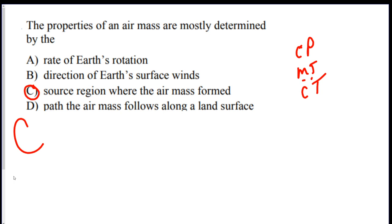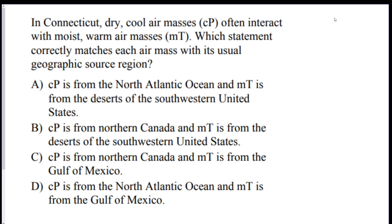Number two. In Connecticut, dry, cool air masses often interact with warm, moist air masses. So CP interacts with MT. Which statement matches each air mass with its usual source region? If you remember, CP is cold and dry. That's from Canada. And MT is warm and moist. So that's from the Gulf of Mexico. You will have to remember this. There is no way around it. So CP is from northern Canada and MT is Gulf of Mexico. So C.